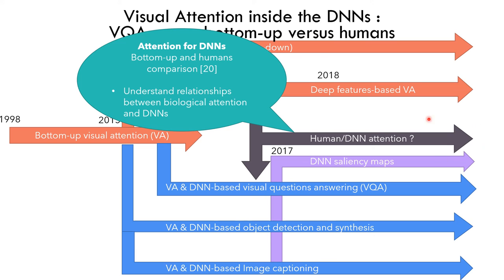So a last branch was added to our attention tree: people trying to connect visual attention from the community which tries to stick to biological visual attention, and the community which only uses an idea of what attention should be within neural networks. This is really interesting because it could help better understand the relationship between biological attention and DNNs, where attention is just a kind of module you add because you know it's good, but without really knowing how it should act compared to where real people actually look.